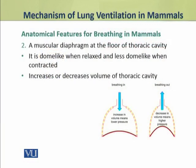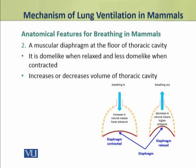The second feature of the lungs that facilitates breathing is the presence of a muscular diaphragm at the floor of the thoracic cavity. The chest cavity is formed of a strong muscular structure which is the diaphragm. When the diaphragm is in a relaxed state, it is dome-like. When its muscles contract, it becomes less dome-like. Due to this contraction and relaxation of the diaphragm, the volume of the thoracic cavity increases or decreases.